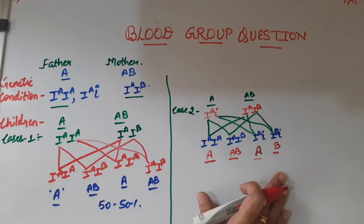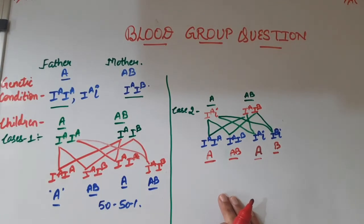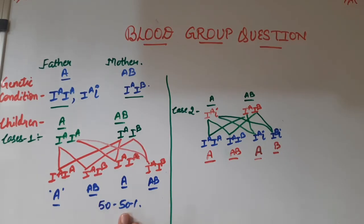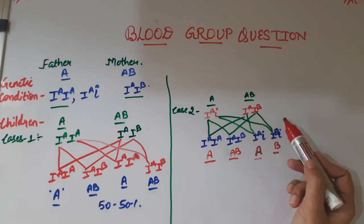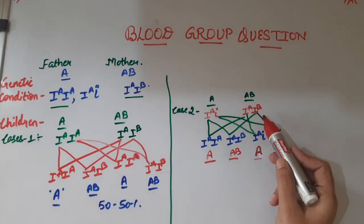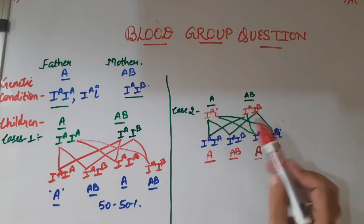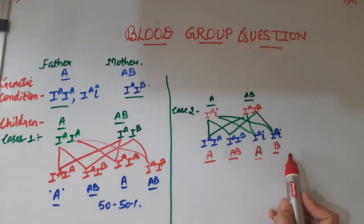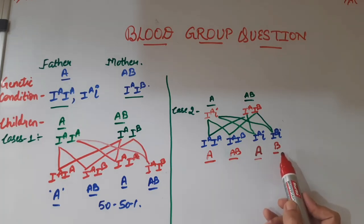This is a very important concept. If you get an objective question asking for the possibilities in children when father belongs to blood group A and mother to blood group AB, remember: in the homozygous case we got only A and AB, but in the heterozygous condition we also get B. Always consider the heterozygous condition case, because it gives you the maximum number of possible outputs — A, AB, and B.